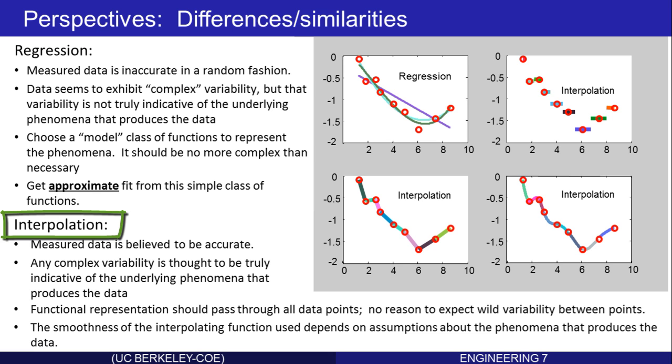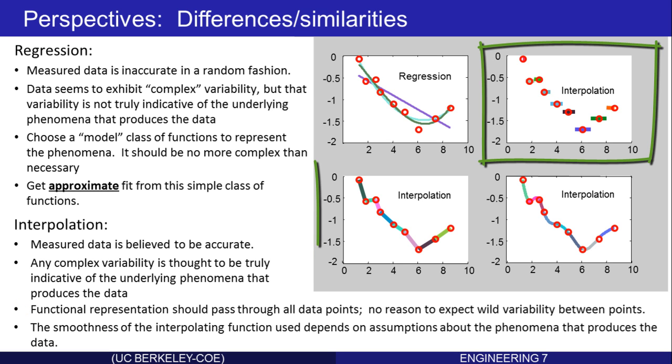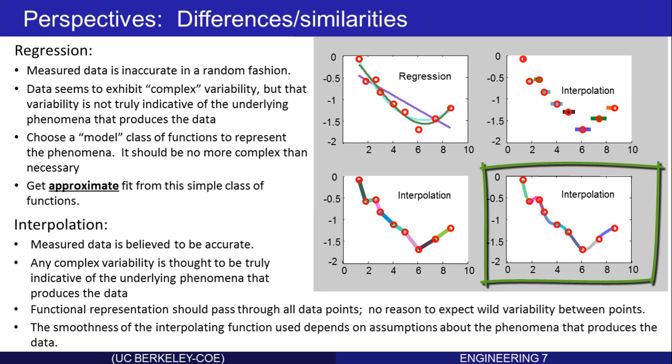The basic tenets of interpolation are that the measured data is believed to be accurate. Any complex variability in the data is thought to be truly indicative of the underlying phenomena that's producing the data, and therefore the functional representation should at least pass through all the data points. All three of these examples show the functional representation passing through the data points.